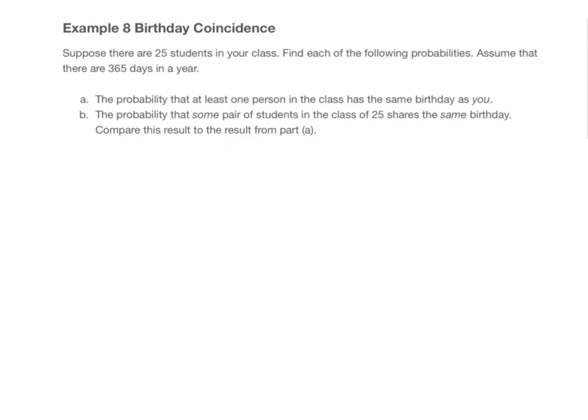Let's look at an example of something that people are surprised by when they consider coincidence — this was the chapter opener. What is the probability that at least one person in a class of 25 students has the same birthday as you? And then, what is the probability that some pair of students in the class share the same birthday? Notice that those are not the same thing — it's the same distinction as you personally winning the lottery versus someone having the winning combination.